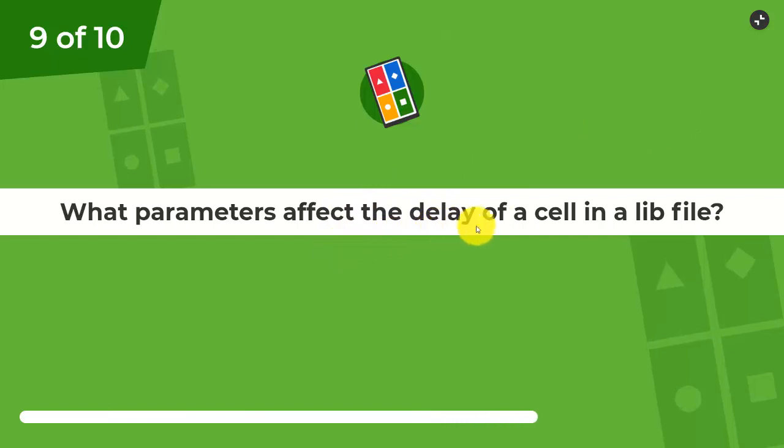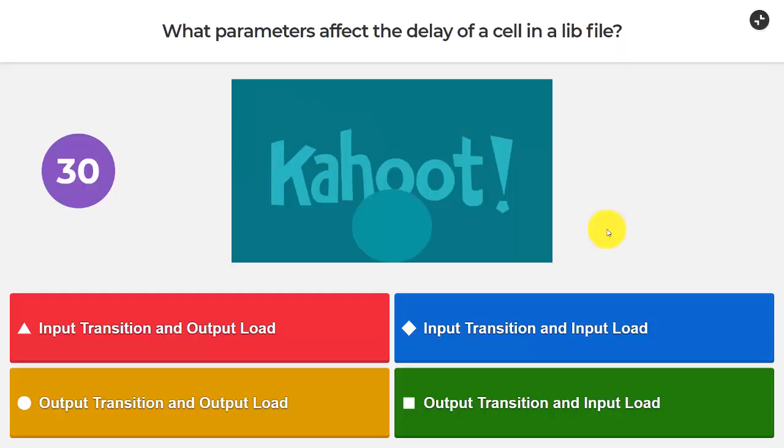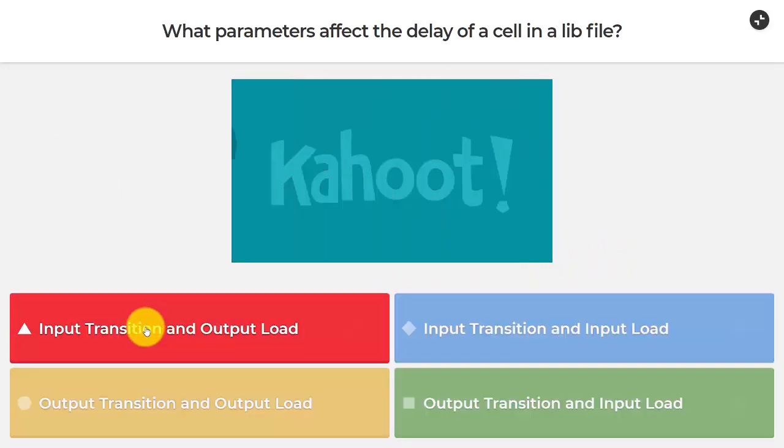What parameters affect the delay of a cell in a lib file? Input transition and output load. Input transition and input load. Output transition and output load. Output transition and input load. Well, this may be the single most important thing that we've learned up until now in the class and one of the most important things that we've learned in the entire class. And of course, it's input transition and output load.